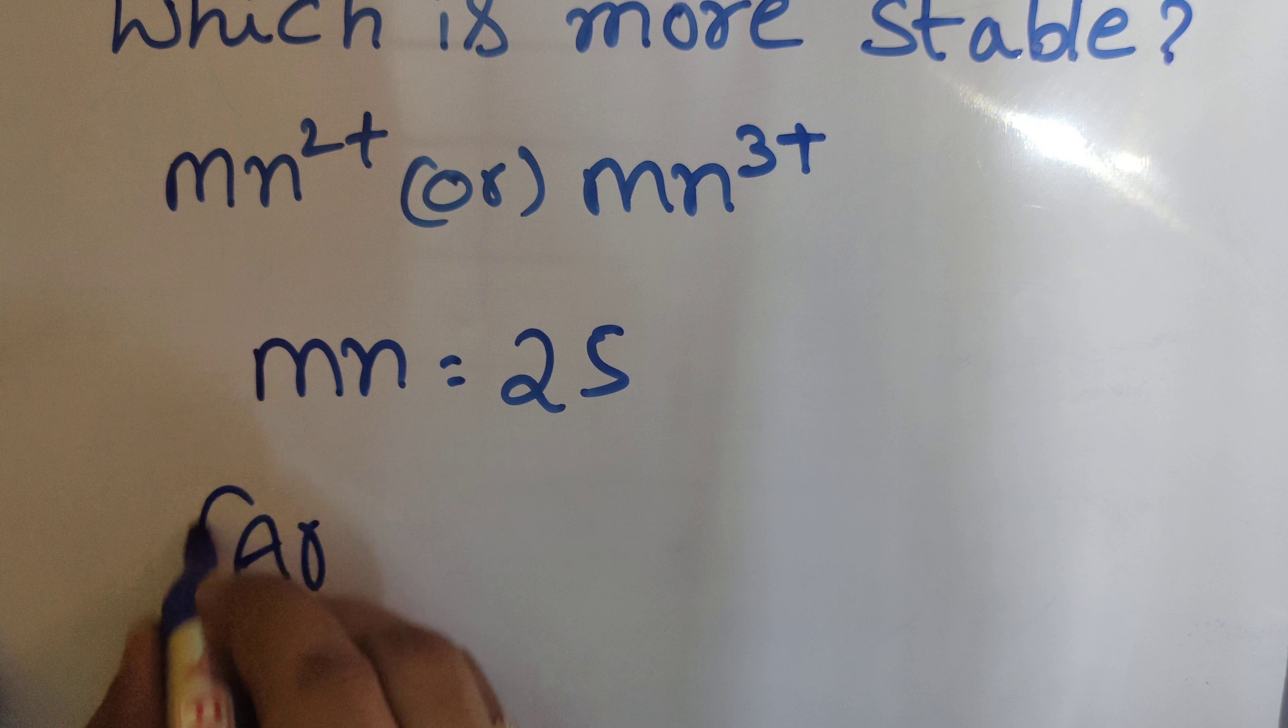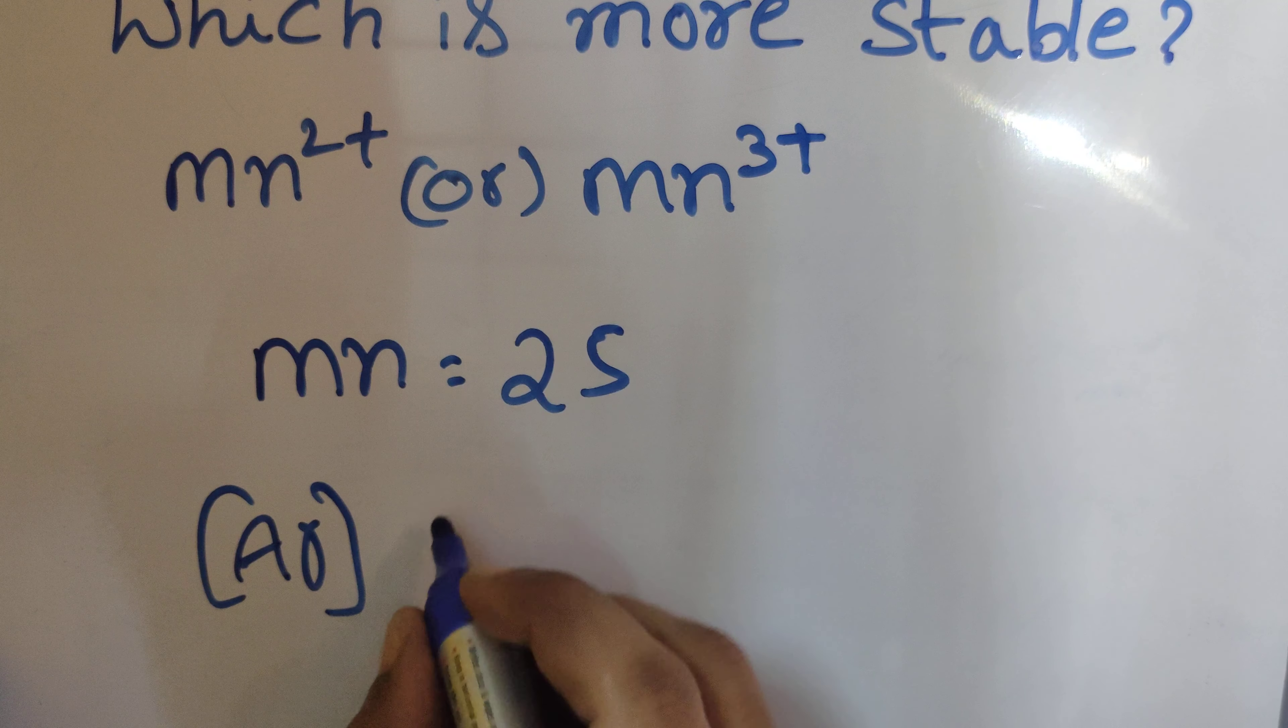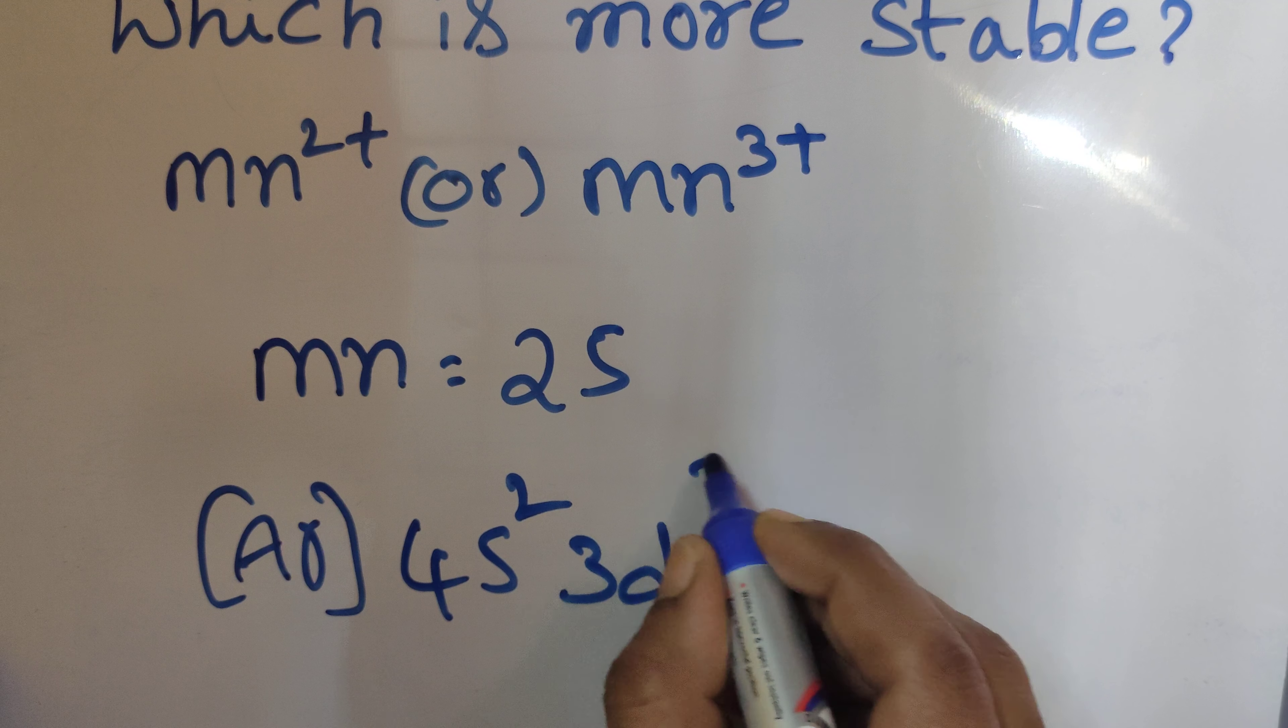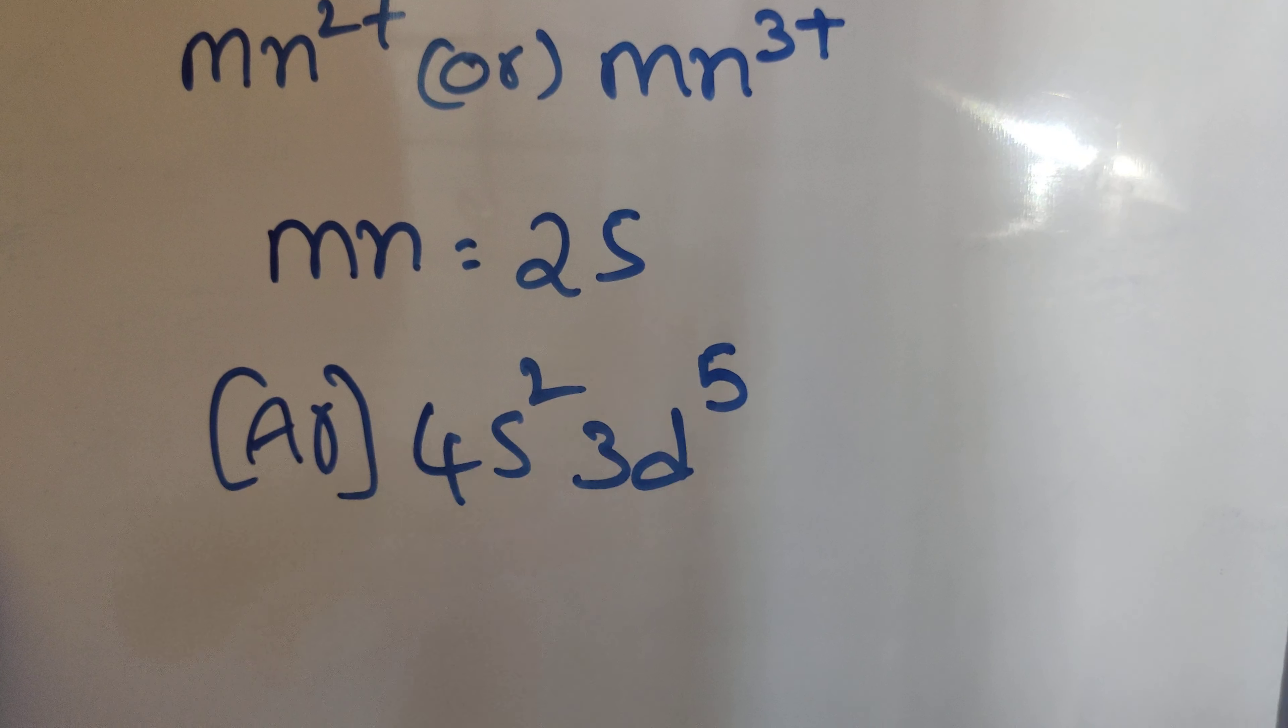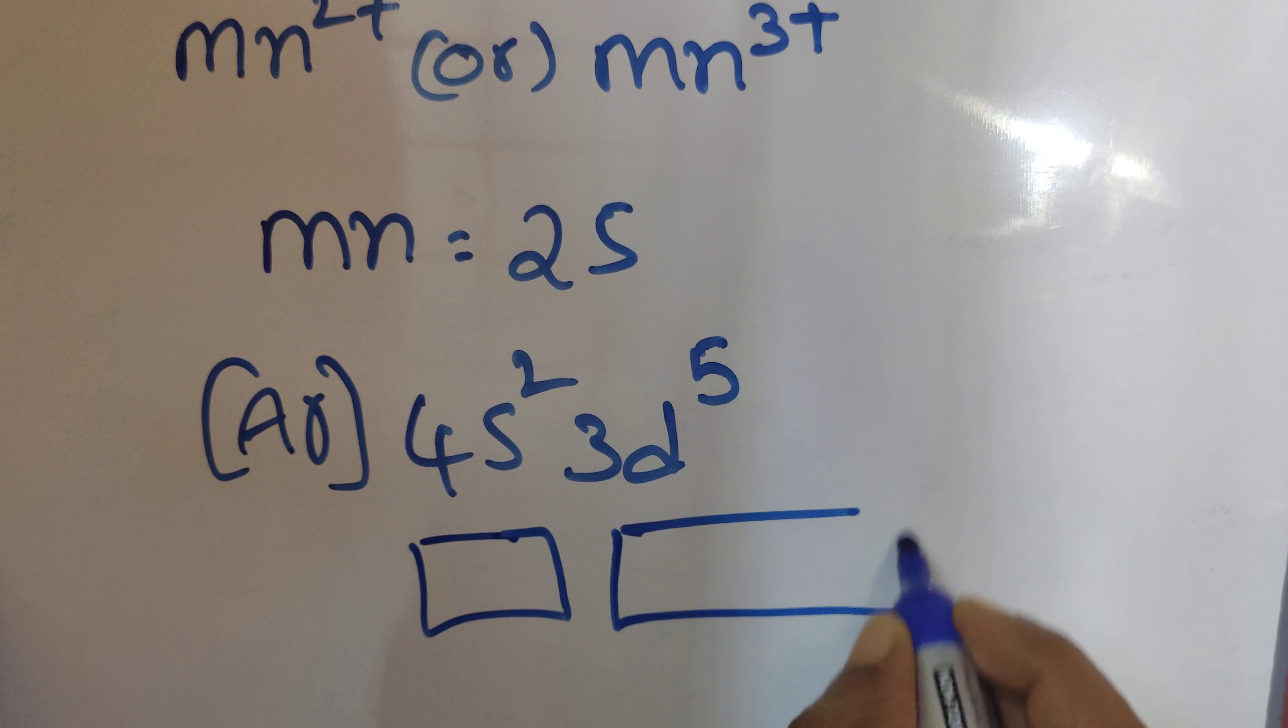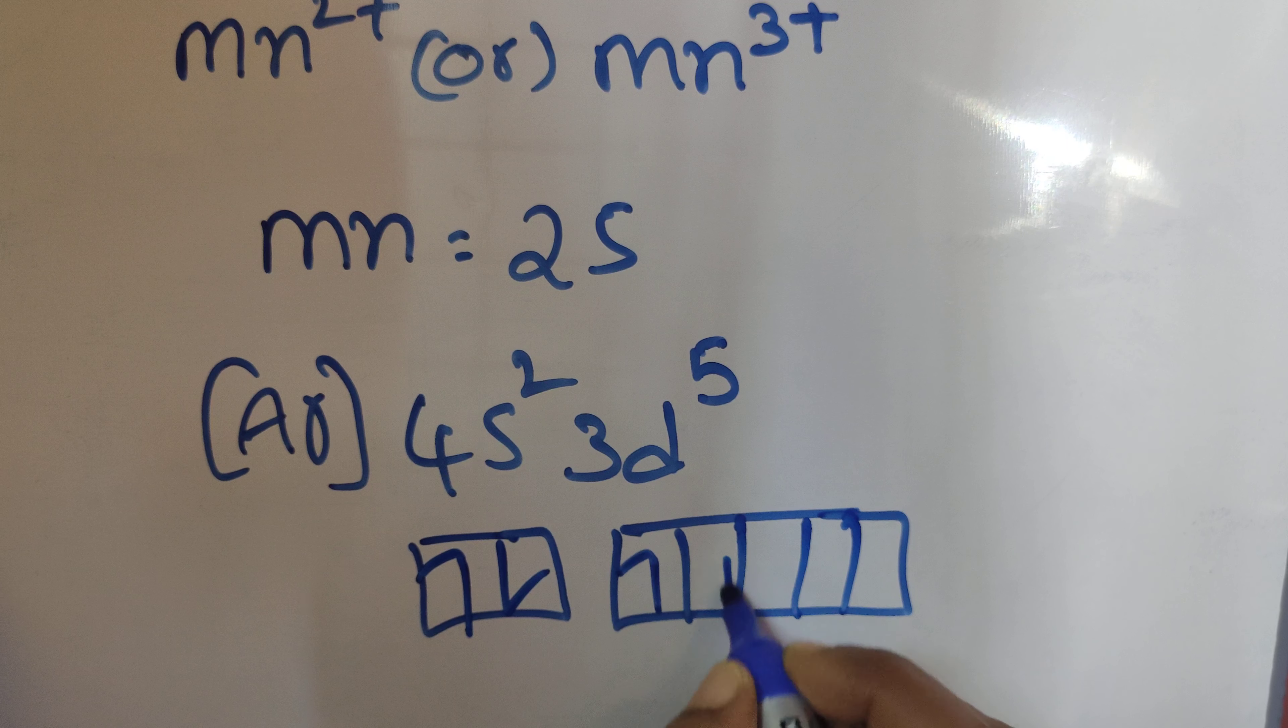Now write the electronic configuration. Here I'm writing only the valence shell electronic configuration. Argon means 18, so 4s² 3d⁵. This is the electronic configuration. Now write the orbitals, s orbital and d orbital, then fill the electrons: one, two, three, four, five.